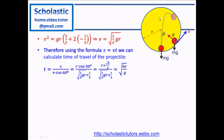At this point the velocity is √(gr/2), directed tangentially. The horizontal velocity is v·cos60° = √(gr/2) · (1/2), and cos30° = √3/2. After simplification the time to travel horizontally to that point is t = √(6r/g).